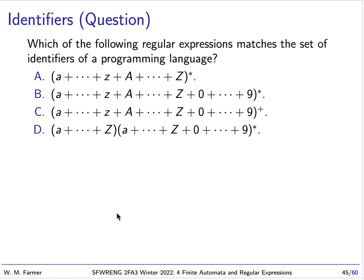In most programming languages, an identifier is an alphanumeric string. It's composed of symbols which are members of the Roman alphabet or the digits zero through nine, and usually an identifier must start with a member of the Roman alphabet. Option A represents all strings of members of the Roman alphabet but does not include the digits, so this is clearly wrong. Option B includes all the digits zero through nine, but it doesn't force the first symbol to be an alphabetical symbol, so this is wrong.